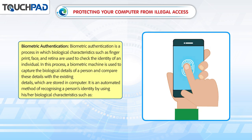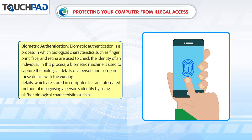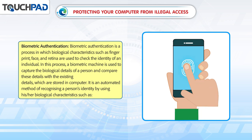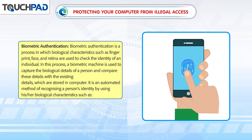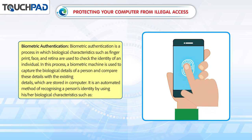Biometric authentication is a process in which biological characteristics such as fingerprint, face, and retina are used to check the identity of an individual. A biometric machine is used to capture the biological details of a person and compare these details with existing details stored in the computer. It is an automated method of recognizing a person's identity by using his or her biological characteristics.